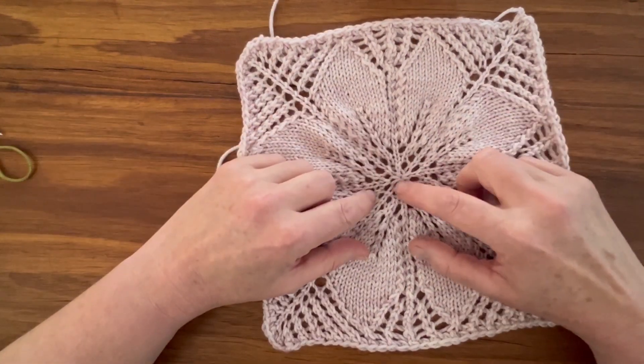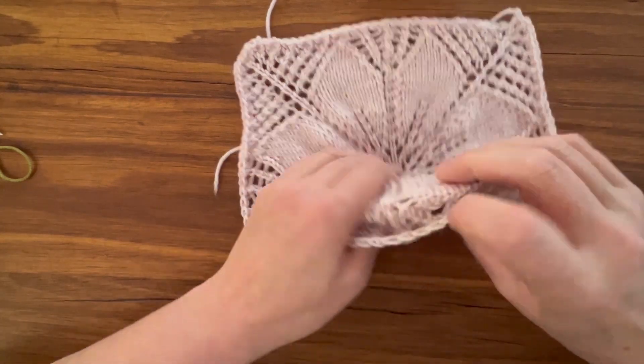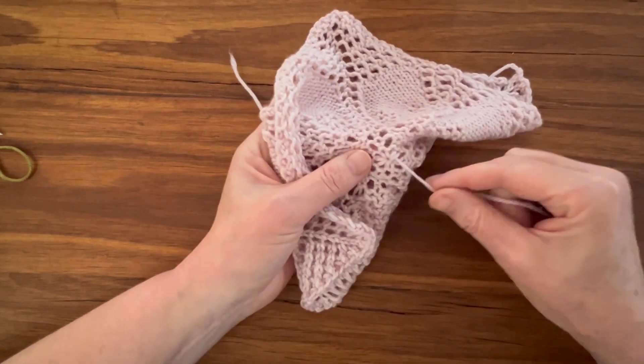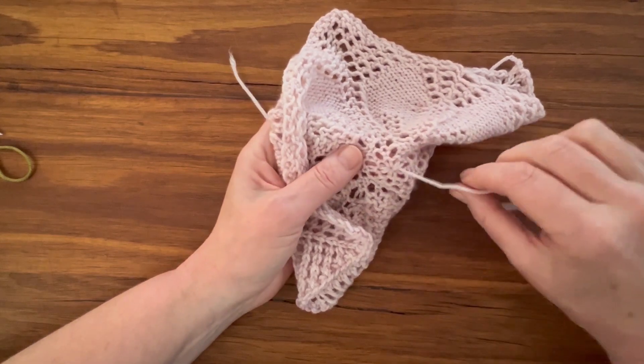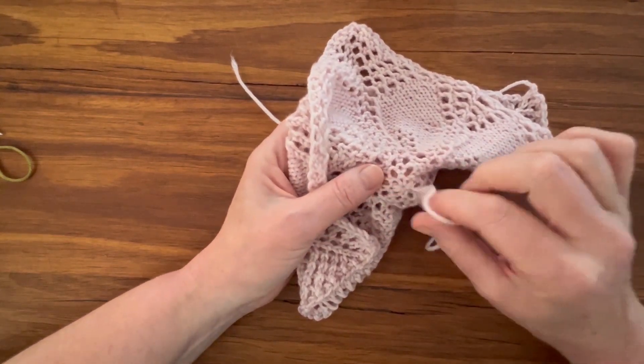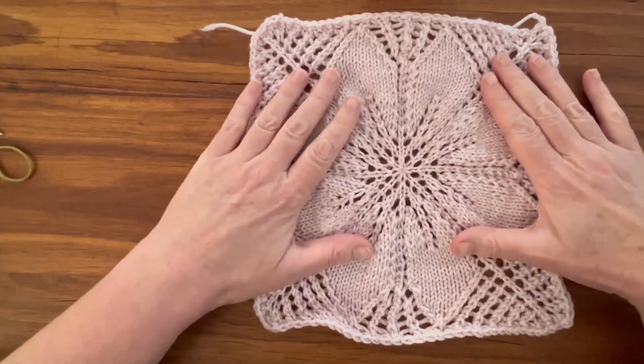This cast on method is great to create a nice closed centered hole. You can tighten it by pulling the tail yarn and then when you finish the project just weave it in to secure that nicely.